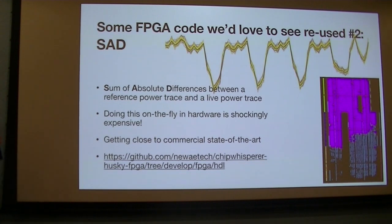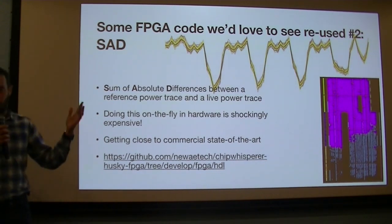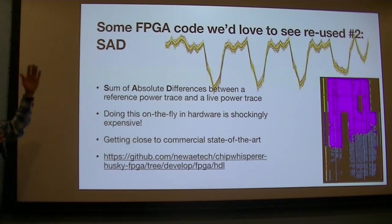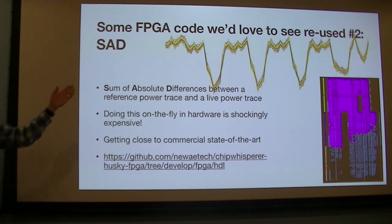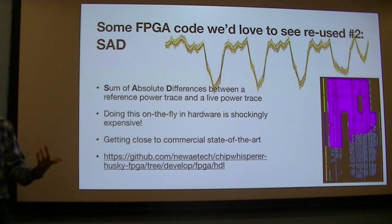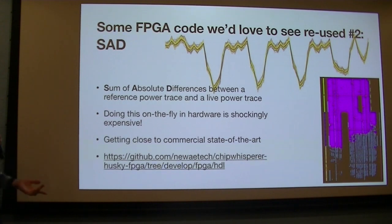When you're doing side-channel attacks, you're making power measurements. In things like public key cryptography in particular, operations are very repetitive, and you want to be able to cache those repetitive things. One of the ways to do that is to trigger your measurements from the actual power trace — triggering from the power trace — which is not something most general-purpose oscilloscopes necessarily do, and it's actually super expensive to do in hardware.